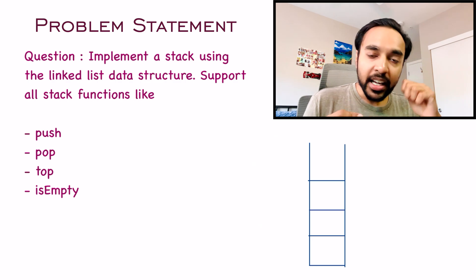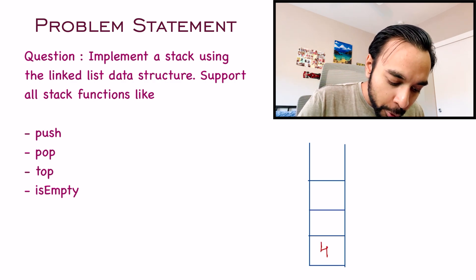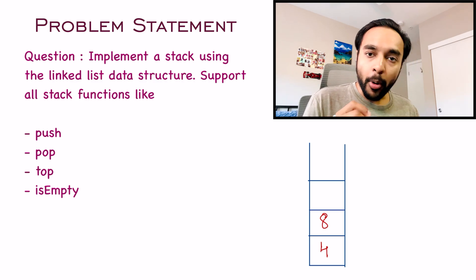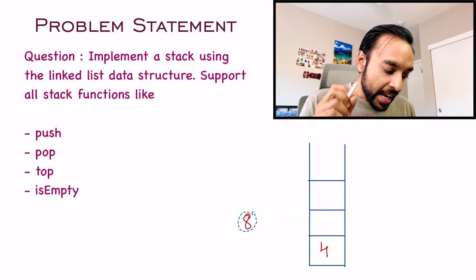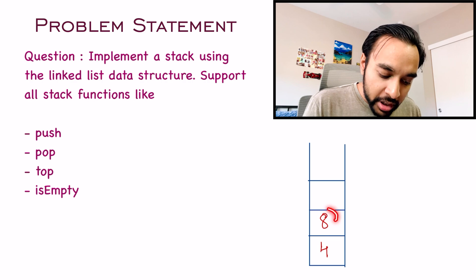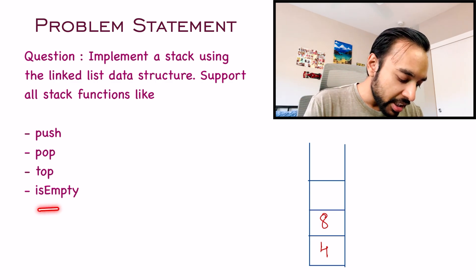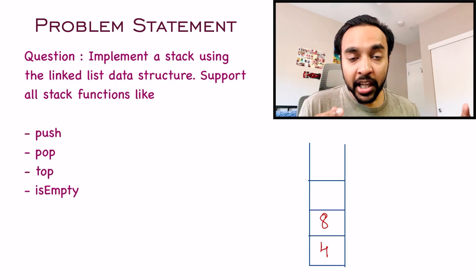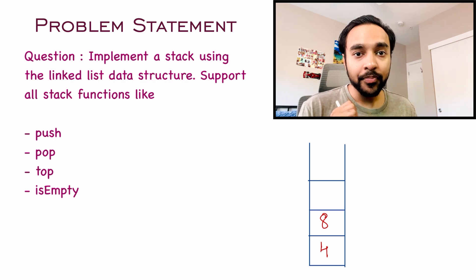Let's say I have a stack and I try to perform some operations. I push 4 and then I push 8. When you do the pop operation, the top element will be removed from the stack. When you do a top operation, you will just be looking at the topmost element but not remove it. The last function is isEmpty — if your stack is completely empty, you get true; if it has any element, you get false. This is a quick refresher. Check out my video on stacks — you can find the link in the description below.